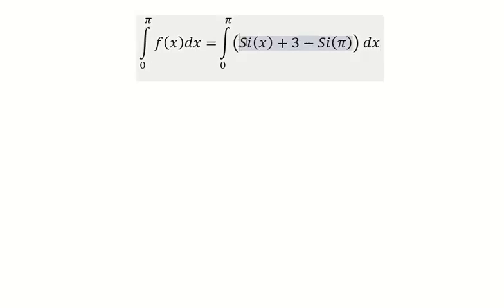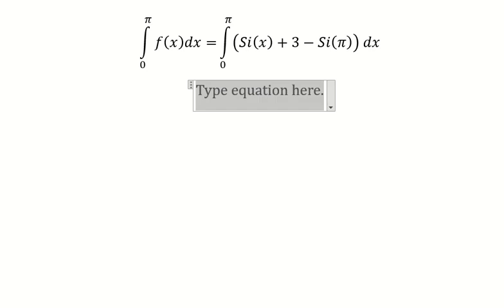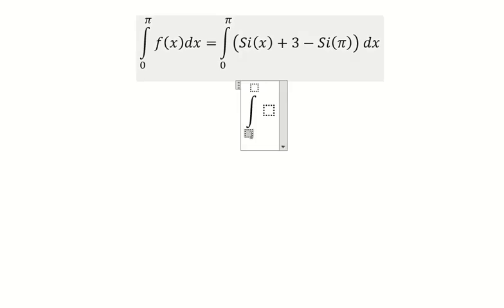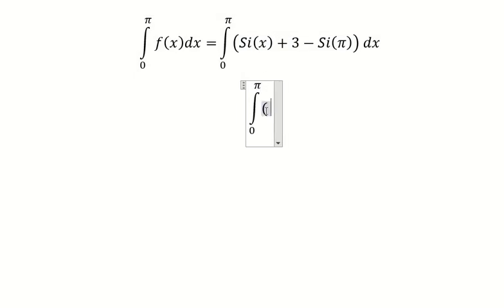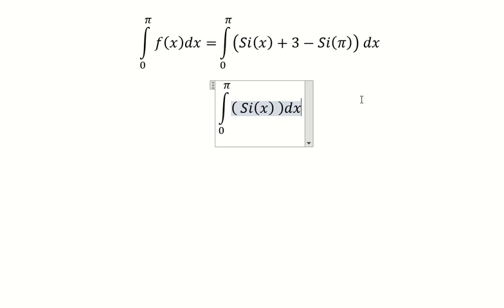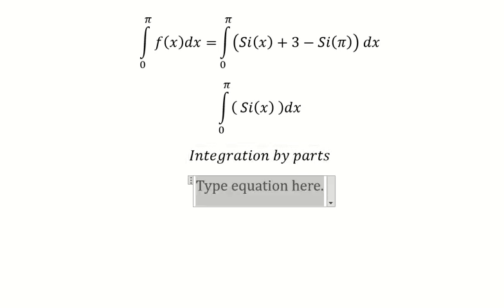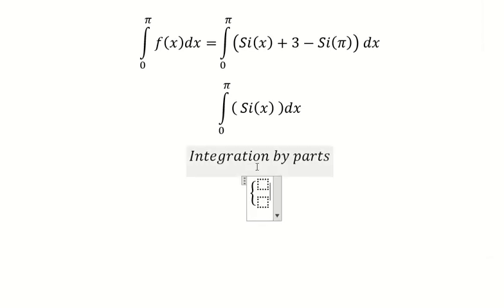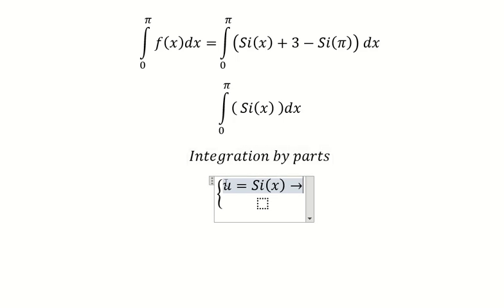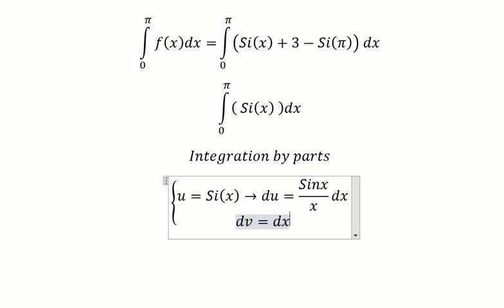So we need to focus on this one. We can use integration by parts. I will put u equal to sine of integral of s. If we do the first derivative for both sides, we have like this. dv equals ds, and the integral of this one we have like this.